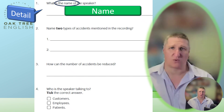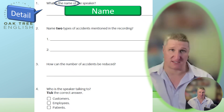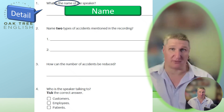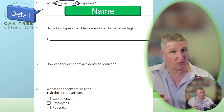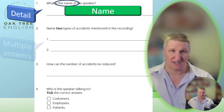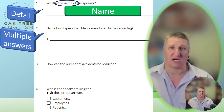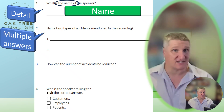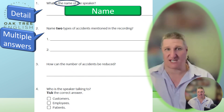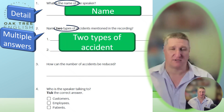The second question is asking you for two answers — multiple answers. There are usually three or four possible answers, and you only have to write two. In this case, you are being asked for two types, or kinds, or sorts of accident, such as a slip or trip, or a giant explosion.